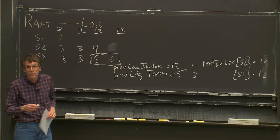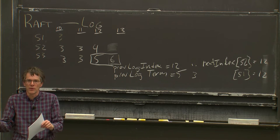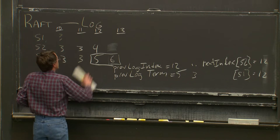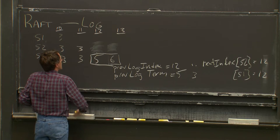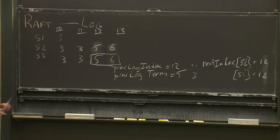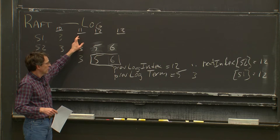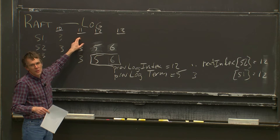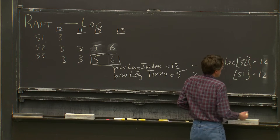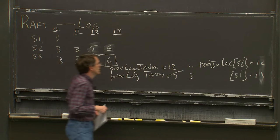The figure 2 rules say: if you accept AppendEntries, you're supposed to delete everything in your log after where the AppendEntry starts and replace it with whatever's in the AppendEntries. So server 2 does that — its log is now just up to entries 5, 6. Server 1 still has a problem because it has nothing at slot 11 — it will return another error. The server will back up its next index for server 1 to 11.